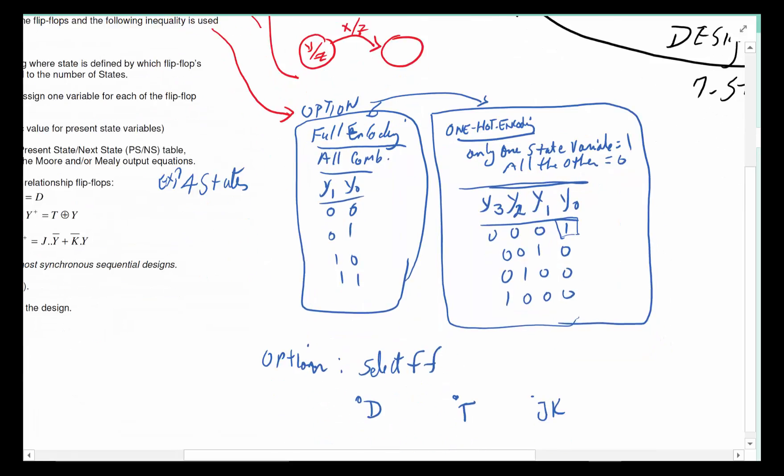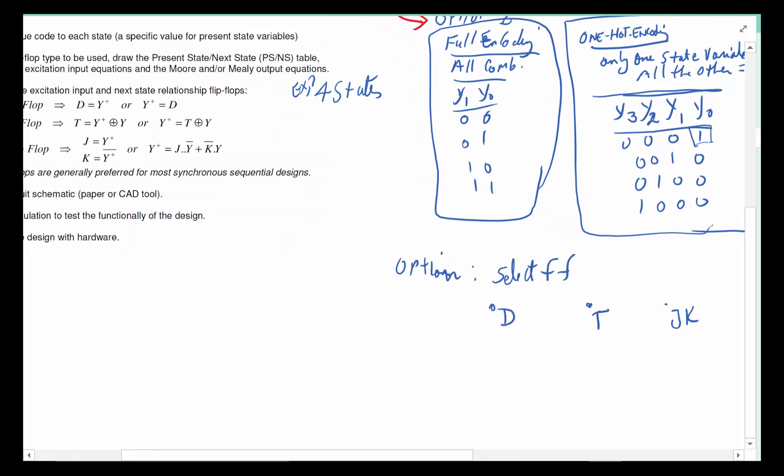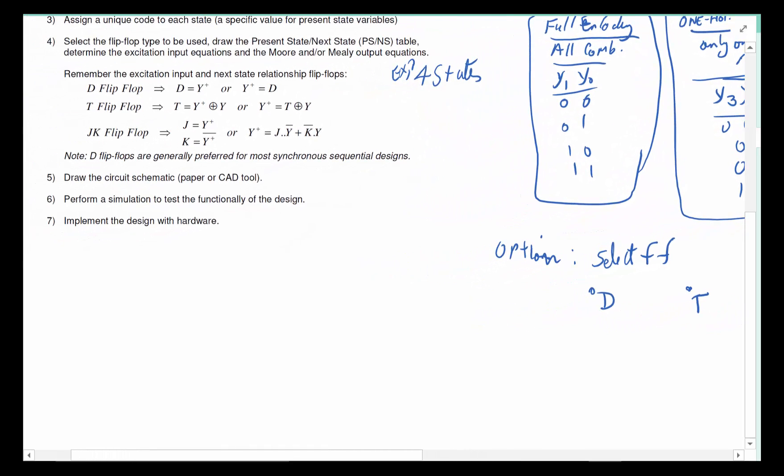Then which flip-flop you want to use. So the same design, the same state machine, same state diagram, same description of the problem can be solved six different ways: full encoding with D flip-flop, T flip-flop, JK, and one-hot encoding with D flip-flop, T flip-flop, and JK. You have six different ways of solving the same problem.